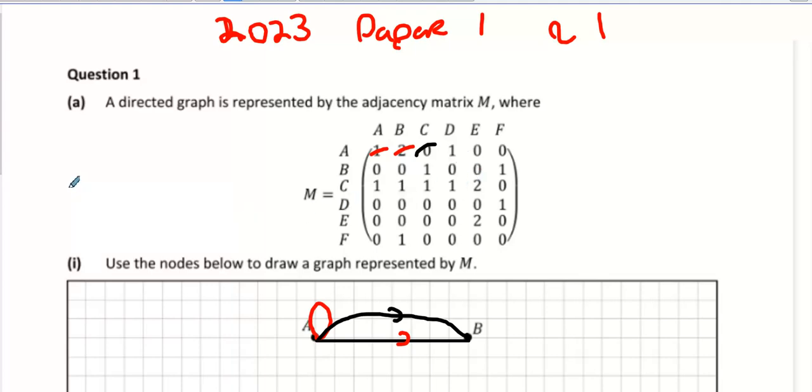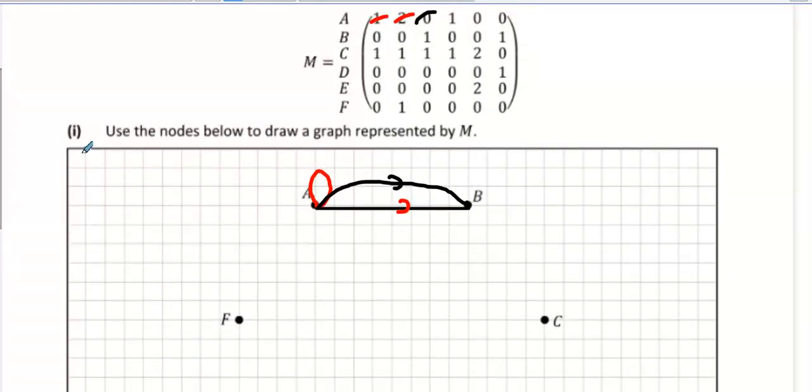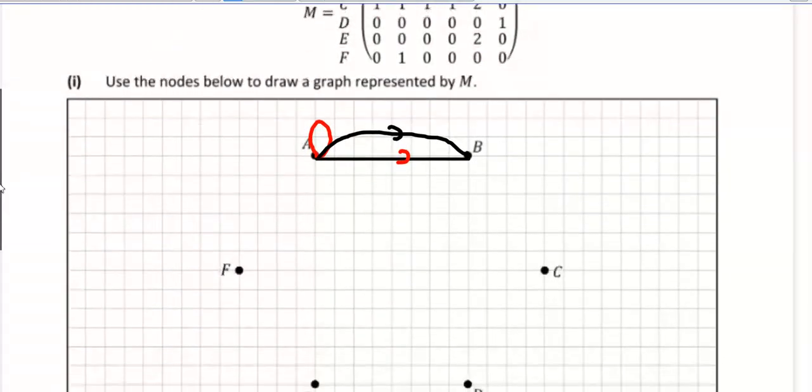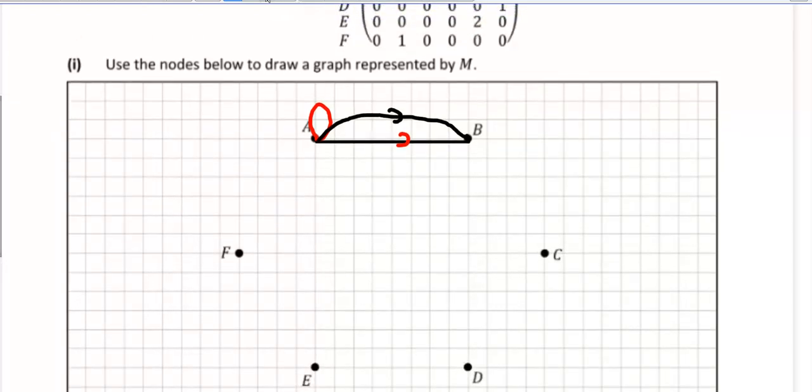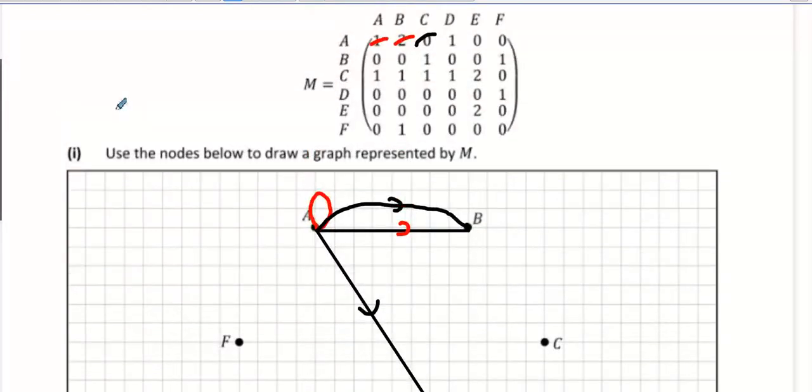A does not go to C, but A does go to D in one way. So A goes to D. Doesn't go to E or F. Done.